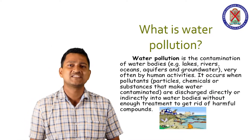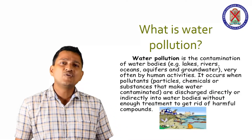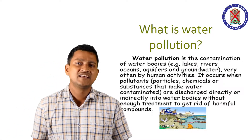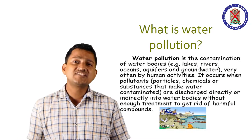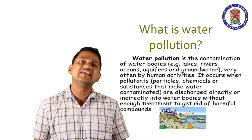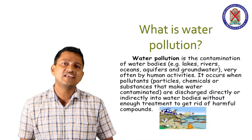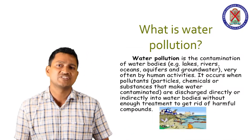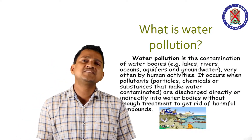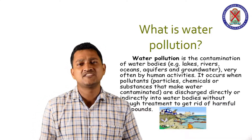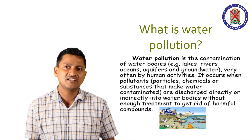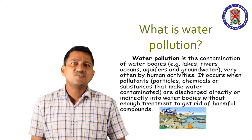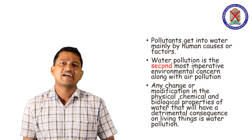It occurs when pollutants — meaning particulate matter, chemicals, solid waste, liquid waste, etc. — are discharged directly or indirectly into water bodies without enough treatment to get rid of harmful components. Water pollution is also defined as an undesirable change in the components of water by adding foreign materials. Pollutants get into water mainly by human causes or factories.